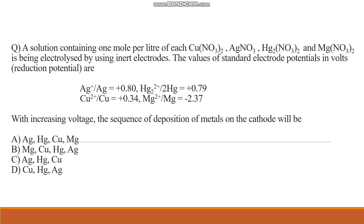We can clearly cancel out options B and D, and we are left with options A and C. After silver, mercury comes second because its value 0.79 is greater than 0.34 and greater than -2.37. Mercury is at second place in both option A and option C. Then copper comes third because its value 0.34 is also greater than -2.37.